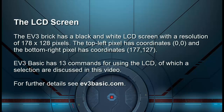The EV3 brick has a black and white LCD screen with a resolution of 178x128 pixels. The top left pixel has coordinates 0,0 and the bottom right pixel has coordinates 177x127. EV3 Basic has 13 commands for using the LCD, of which a selection are discussed in this video.